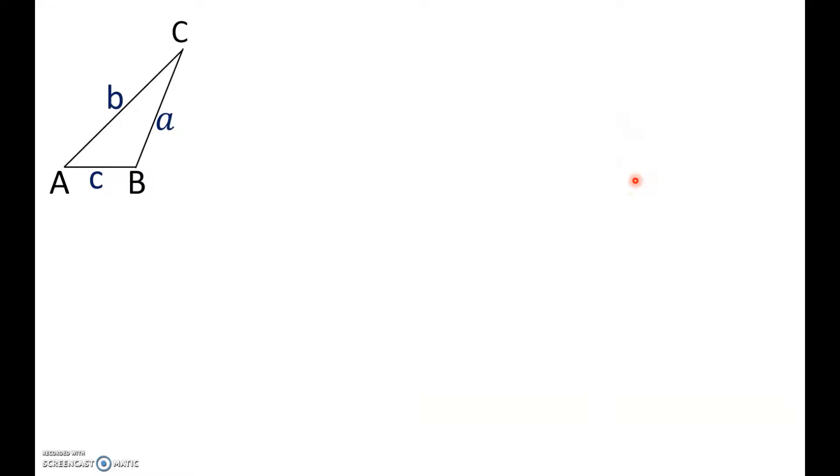Now, let's consider an obtuse angle triangle. So, it's obtuse at B. How can we apply the same sine rule to this? I'm going to extend this AB to a point P here and draw a perpendicular line all the way to C.